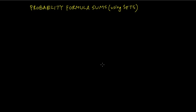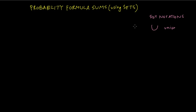Sets refer to a collection — that's all I'm going to talk about in this lecture. They have notations called set notations. The union symbol means everything, all. In probability, union is referred to as the 'or' probability or the addition rule.